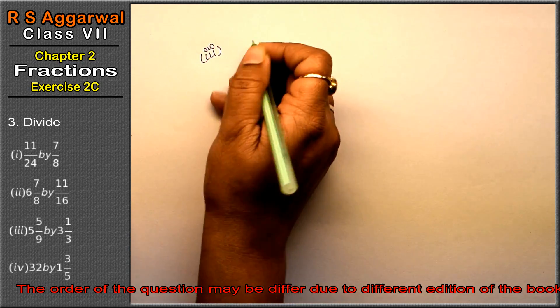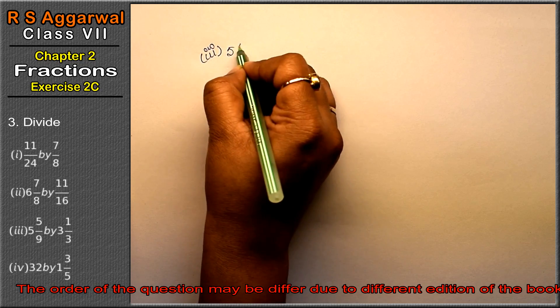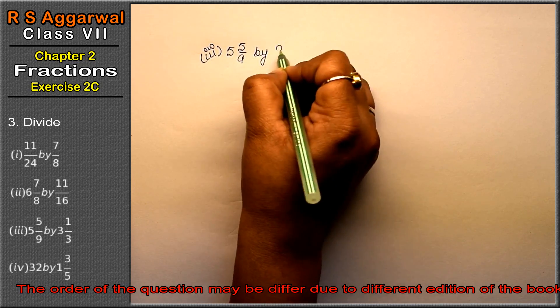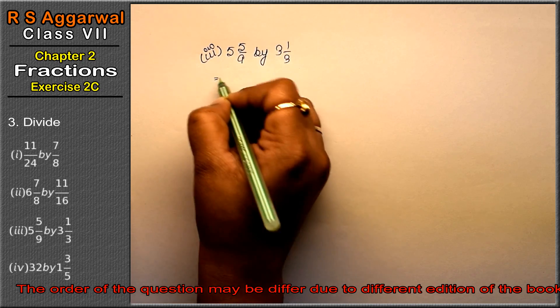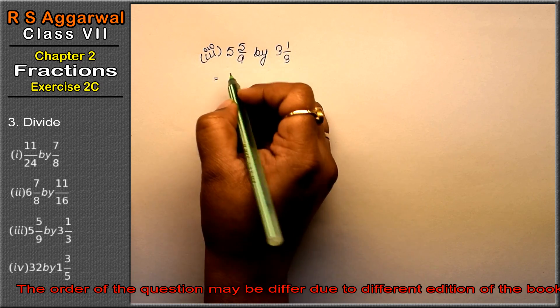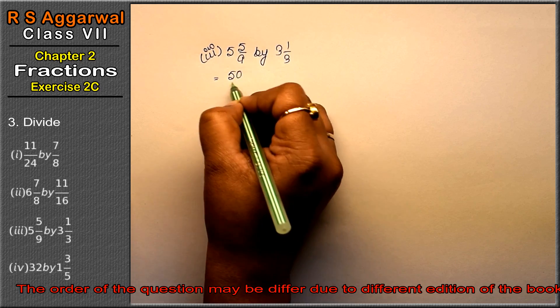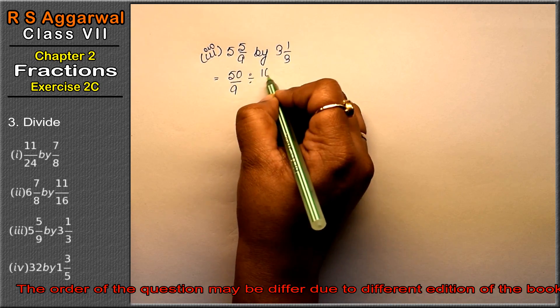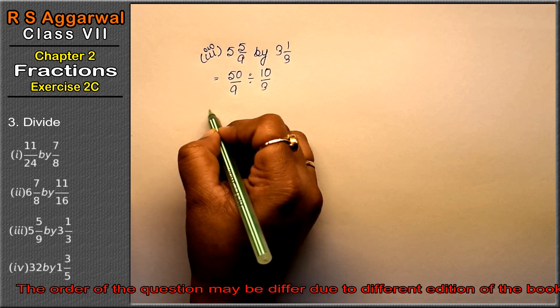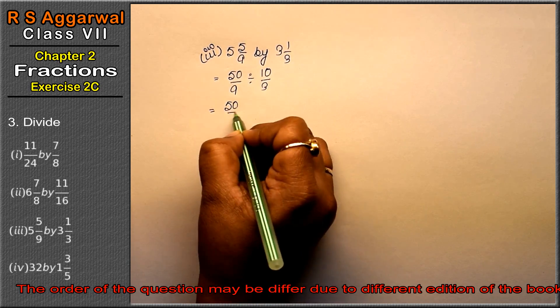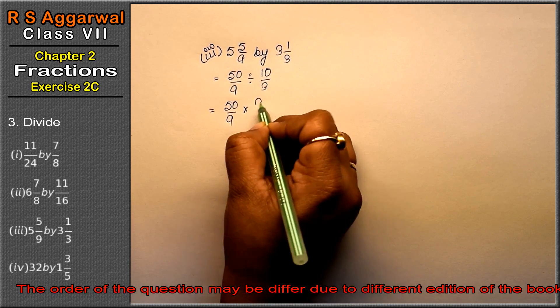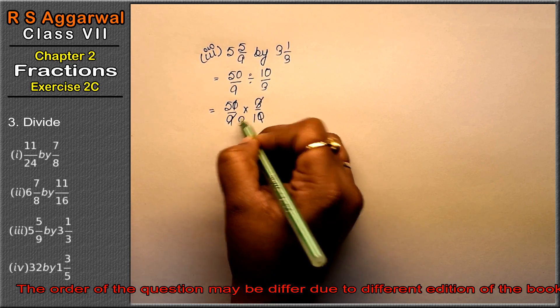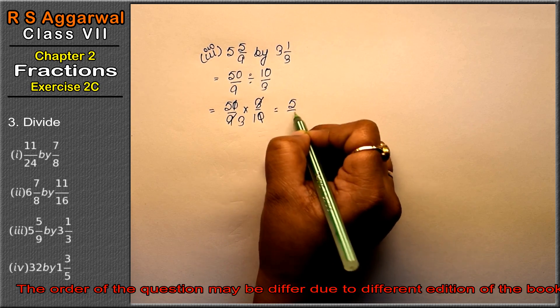Third part is 5 whole 5/9 divided by 3 whole 1/3. So 9 times 5 is 45 plus 5 is 50/9 divided by 3 times 3 is 9 plus 1 is 10/3. Then we cancel: 3 times 3 is 9. That means 5/3.